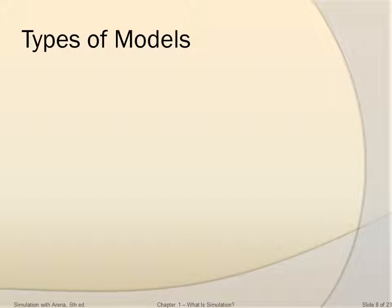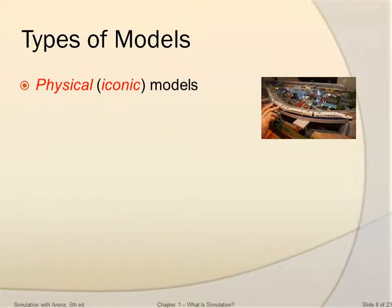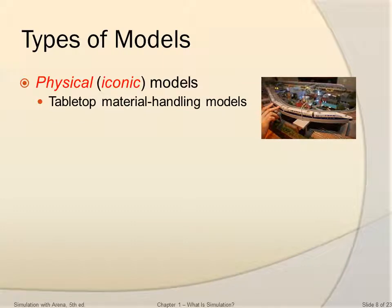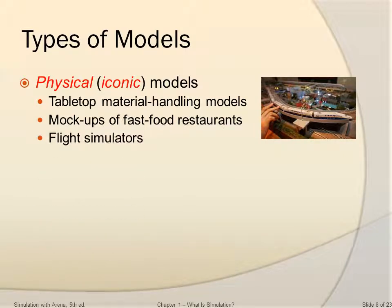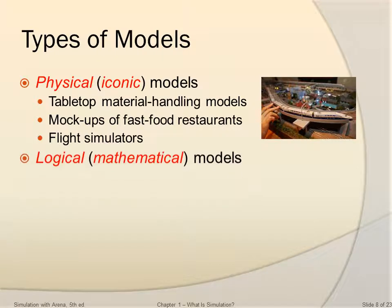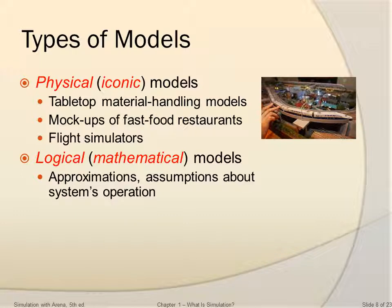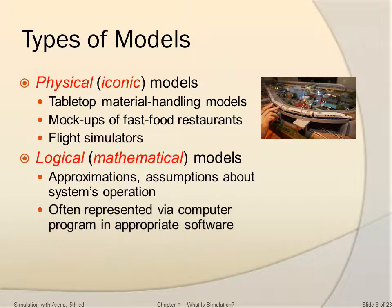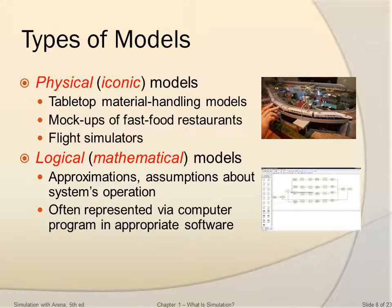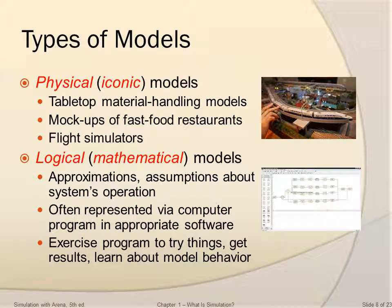So what are the different types of models? First we have physical models. Physical models can be tabletop material handling models, mock-ups of fast food restaurants, flight simulators, etc. There's also logical or mathematical models. These are the models we're going to focus on in this class. These are approximations and assumptions about the system's operations, often represented through computer programs and appropriate software. We exercise the program to try things, get results, and learn about model behavior.